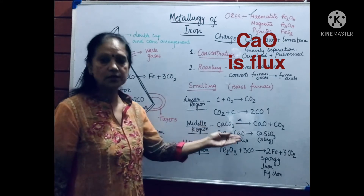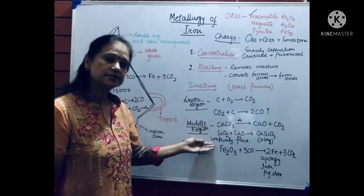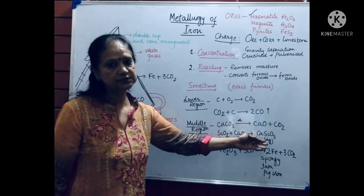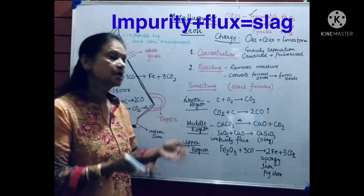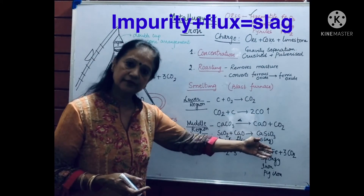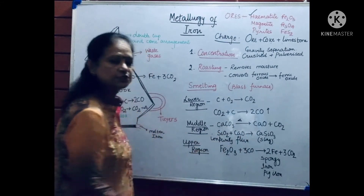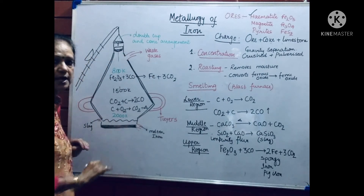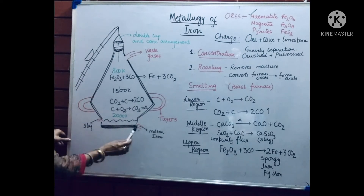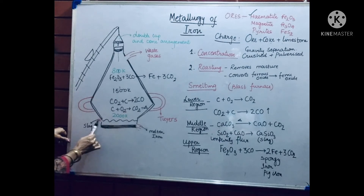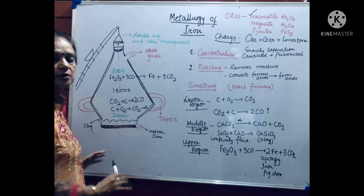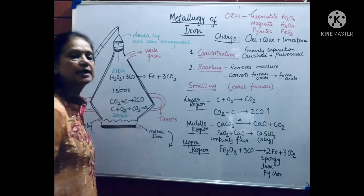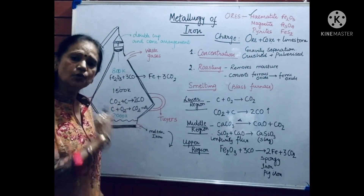Flux is the substance which combines with the impurity to form slag. Slag is formed by: impurity plus flux. Different ores have different impurities, so different types of flux and slag are used and formed. In this case, the slag formed is calcium silicate. Slag is very light, so it floats on top of the molten iron. There are two openings at the bottom of the furnace — one gives molten iron and the other gives slag.